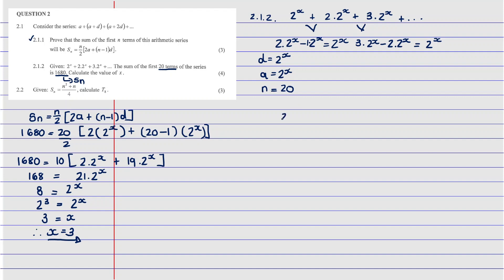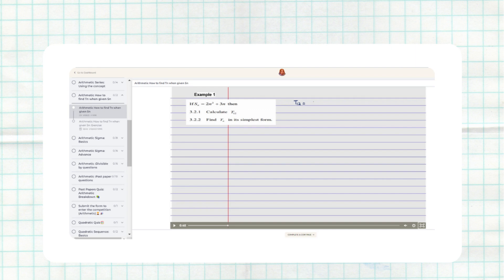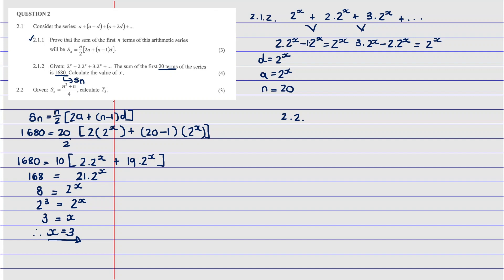Now we're going to answer question 2.2. They say: given that Sn = (n² + n) / 4, calculate T8. Almost every question like this I've covered in the course — there's a similar question there, along with a quiz and multiple practice questions dealing with this type, so you can have a wider range in answering it. They ask us to calculate T8 given Sn.